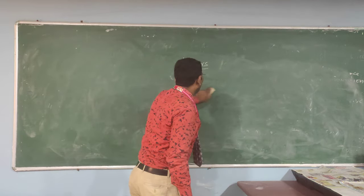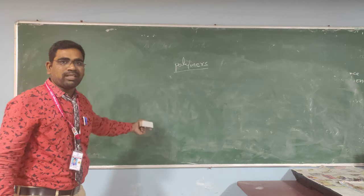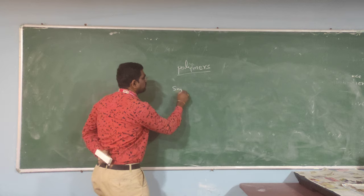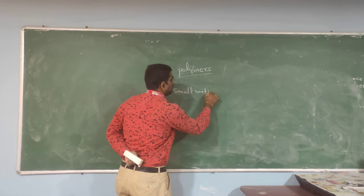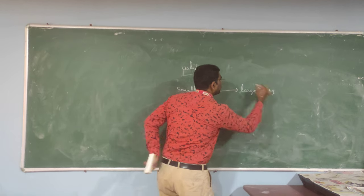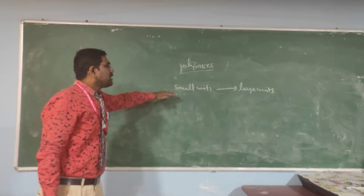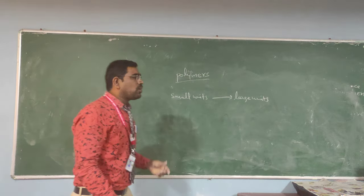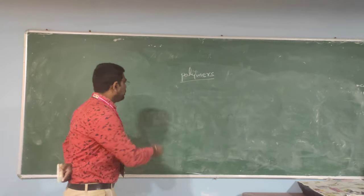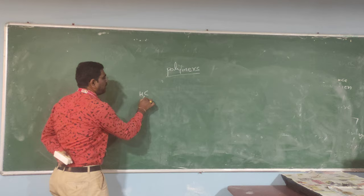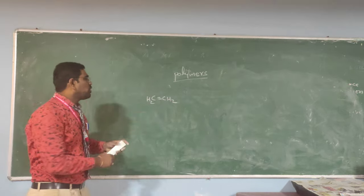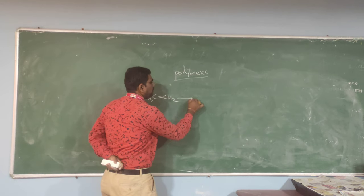Let's discuss some definitions. What is a polymer? A polymer is nothing but small units converted to large units. For example, we take ethene — CH2 double bond CH2. This is a small unit, which you can also call a monomer. This monomer is then converted to a polymer.